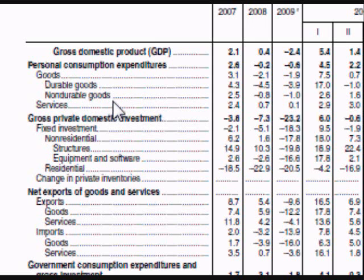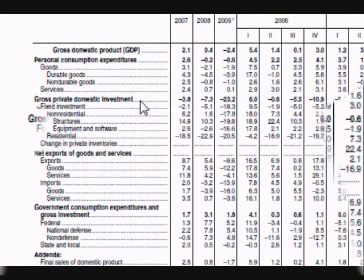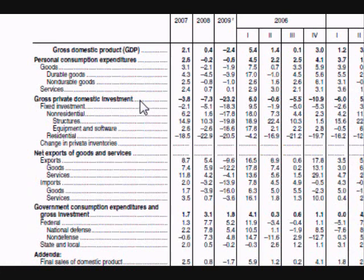Non-durable goods are goods that last less than three years — for instance, food, clothing, and shoes. This section tends to remain more stable during both expansions and recessions. Services make up about 60% of consumption while goods make up about 40%, which is why the US is often called a service economy.